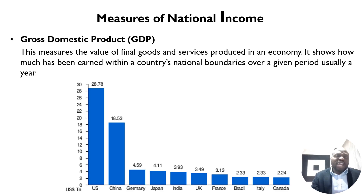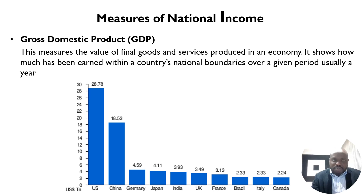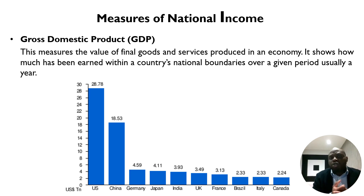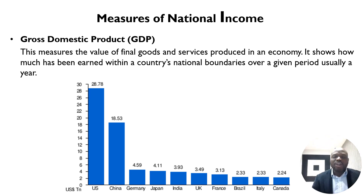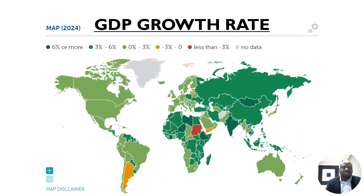The first measure of national income is Gross Domestic Product (GDP) — the value of final goods and services produced within a country's national boundaries over a period, usually a year. On screen I have the GDP for some selected top-earning countries. We can also look at GDP growth rates — the percentage change per year — and most of the high growth is coming from what some term developing or middle-income countries.